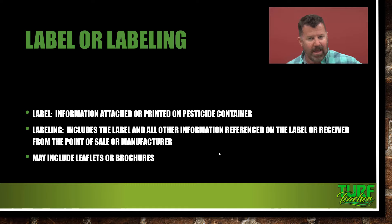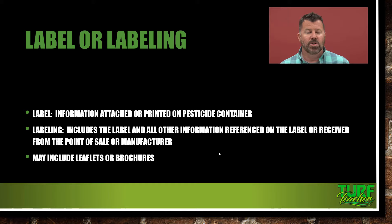You need to have that. I know we've got cell phones and iPads in the truck, but it's a lot easier to keep that in a three-ring binder so you can just grab it and show it to the extension agent if they decide to do an inspection. And it can include leaflets or brochures. But remember — label is the law. The labeling is not. Label is the law.